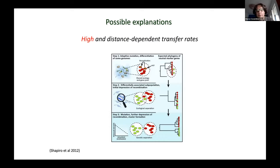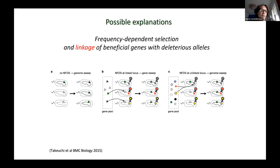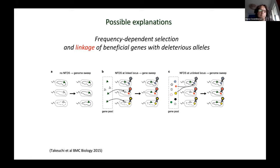They also proposed towards the end of the paper that maybe there's some frequency-dependent selection due to different deleterious genes — for example, genes that are under phages — that are linked with the beneficial gene. This idea, originally proposed by Shapiro as a concept, was built by Kunihiko Kaneko and Takeuchi with several papers into a mathematical model, where they show that indeed this is possible. But this model requires that every time the beneficial gene is linked with a different deleterious gene, which is possible, but so far maybe not systematically the case, and so far there is no experimental validation of this — but certainly it's a possibility.